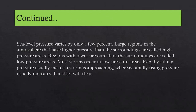At sea level, the pressure varies only by a few percent. Large regions in the atmosphere that have higher pressure than their surroundings are called high pressure areas. Regions with lower pressure than their surroundings are called low pressure areas. Most storms occur in low pressure areas. Rapidly falling pressure usually means a storm is approaching, whereas rapidly rising pressure usually indicates that skies will be clear.